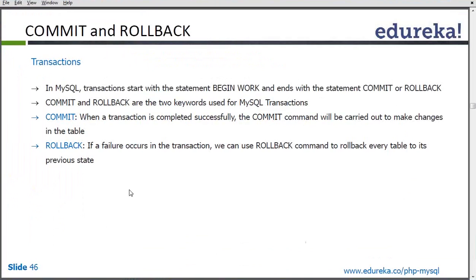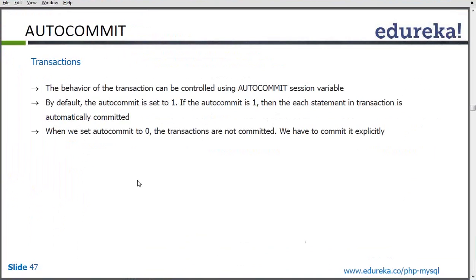Transactions basically begin with BEGIN and end with COMMIT or ROLLBACK. Either we commit our transactions or if there is an issue, we roll back. Commit simply means if the transaction is completed successfully, the commit command will make the changes permanent. Rollback means if there is an issue in any transaction action, everything will be rolled back. The behavior of the transaction can be controlled by auto commit — by default it is 1. If auto commit is 1, all transaction statements are committed automatically. When it is 0, we have to provide the commit clause at the end of the transaction to commit all the queries.